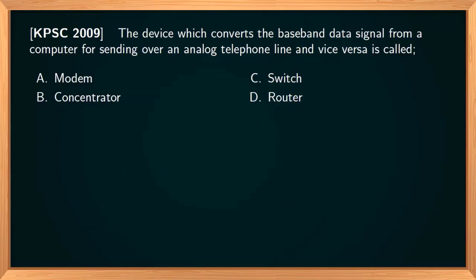The device which converts the baseband data signal from a computer for sending over an analog telephone line and vice versa is called a modem. Analog information coming to a computer from a telephone network is converted into digital form by a modem, and digital information from the computer is converted back into analog form by the modem as well.